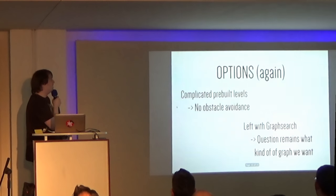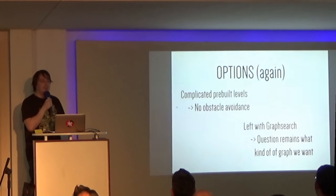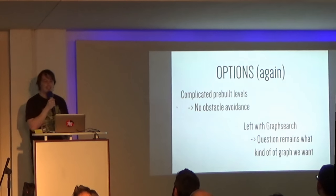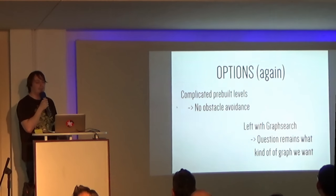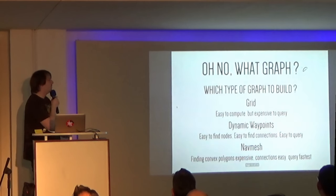So, what are our options? Again. We have complicated pre-built levels. So, we can't do the obstacle avoidance approach. Because if there's a large wall, it's not good enough to go, oh, I can evade this large wall to the left, and then run into it slightly later. That's not going to work. So we are left with graph search algorithms for pathfinding, basically. So, then the question is, what kind of graph do we want?